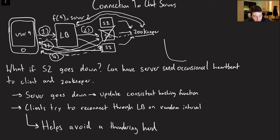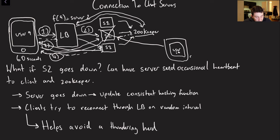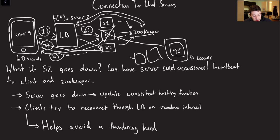One important consideration: if multiple users connected to the same failed server all time out at the same moment, we could cause a thundering herd. For example, if a million devices all try to reconnect simultaneously through the load balancer to the same new node, we might bring that server down. So it's important to add random jitter to reconnection timeouts — for instance, one user times out after 60 seconds, another after 55 seconds.